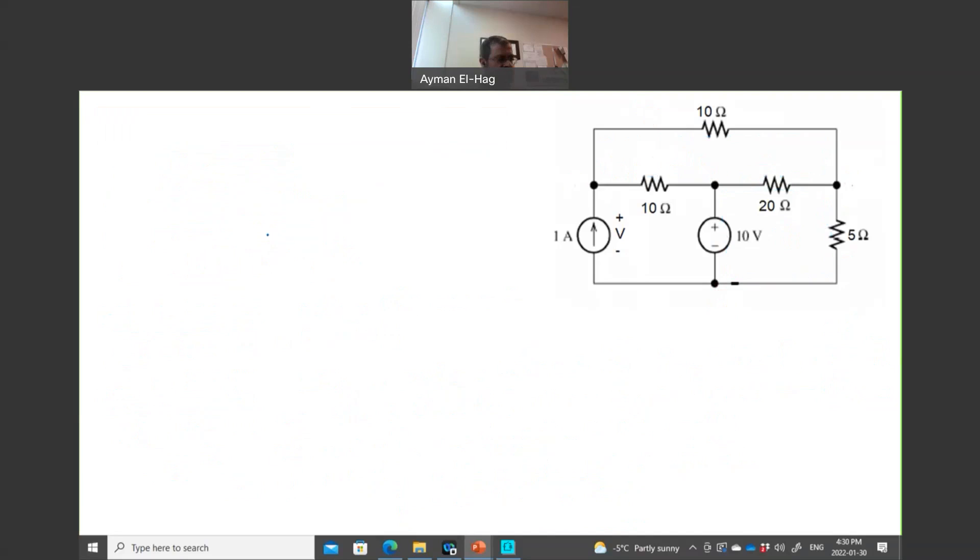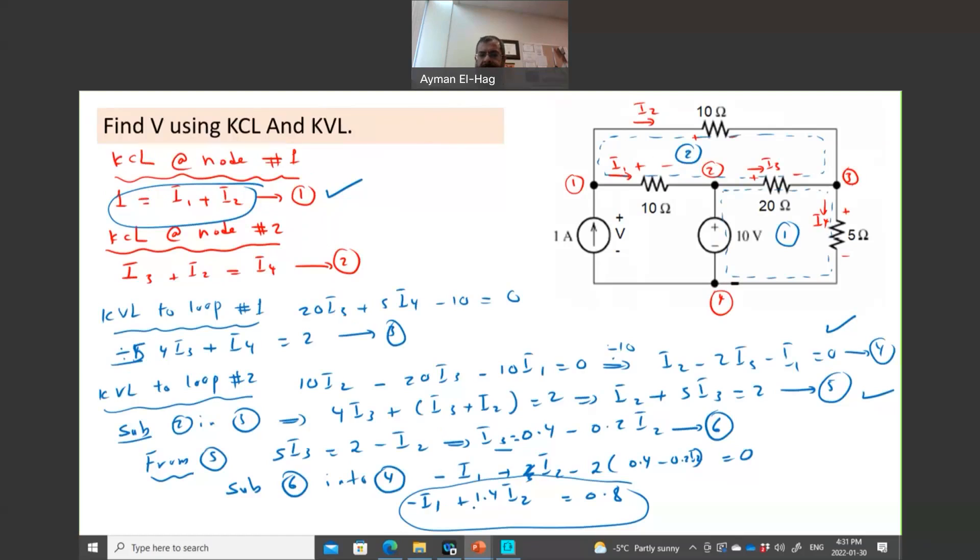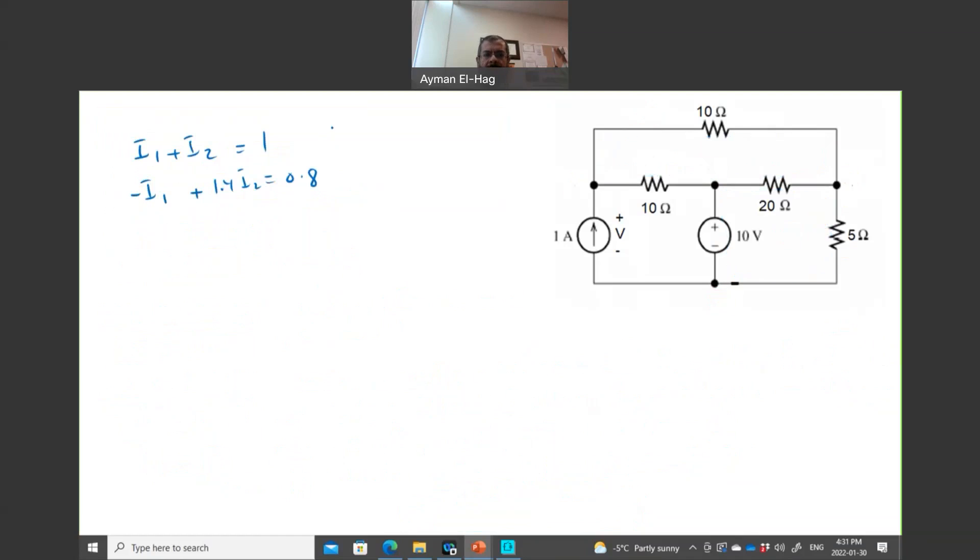So I will have this equation and this equation. Let's go back here and rewrite them. I will have I1 plus I2 is equal to 1. This is my first equation. And then the last equation, the second equation I have, which is minus I1 plus 1.4I2 is equal to 0.8, which is this equation.